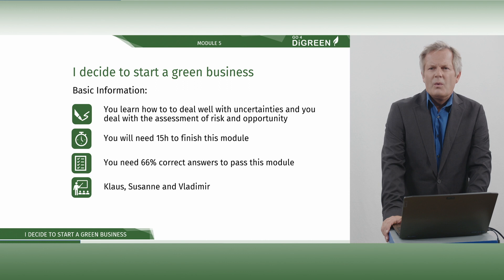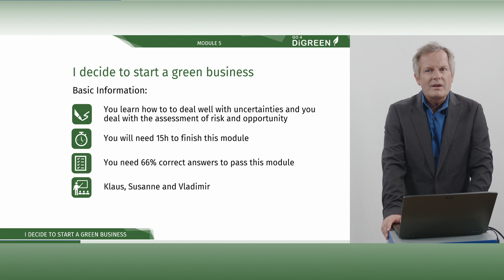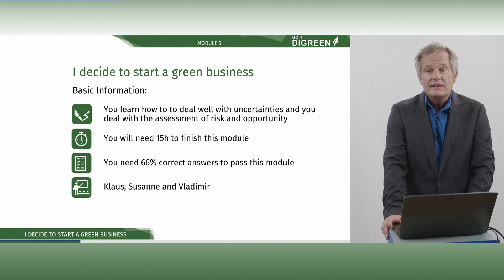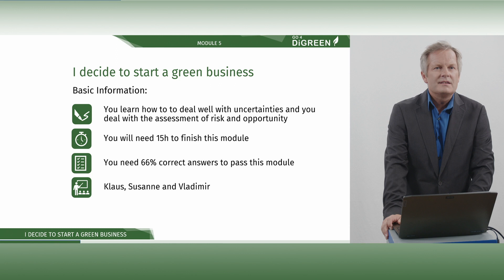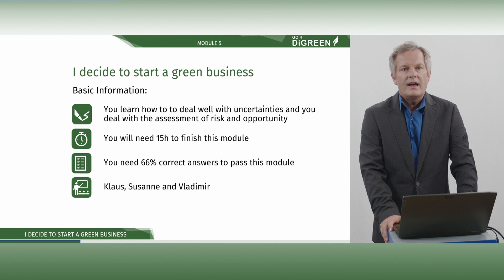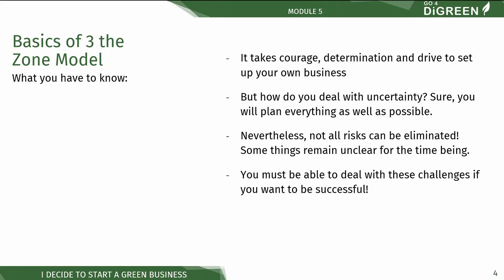What else do you need to know about this module? As a short repetition: you learn how to deal well with uncertainties, and you deal with the assessment of risk and opportunity. You will need 15 hours to finish this module, and you need 66% correct answers to pass. Your lecturers are Klaus, Susanne, and Wladimir.